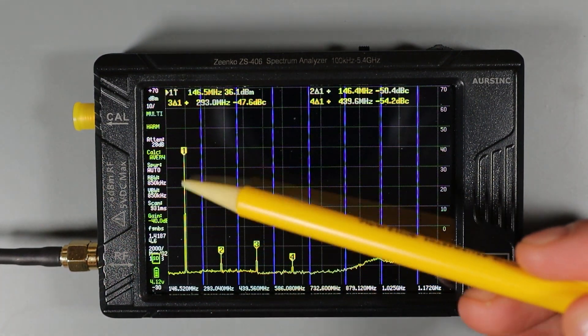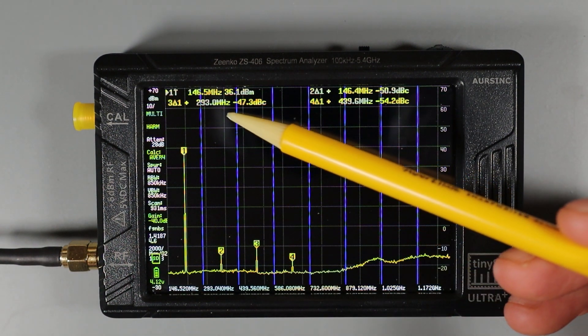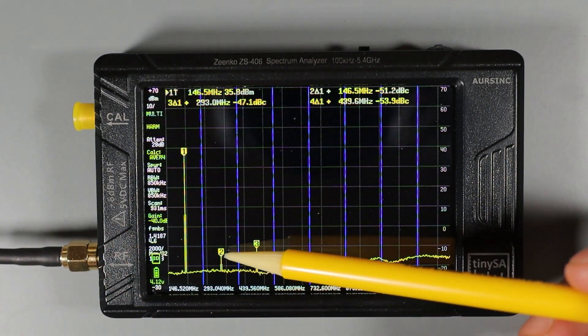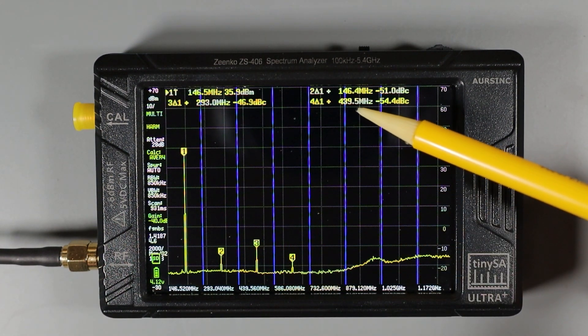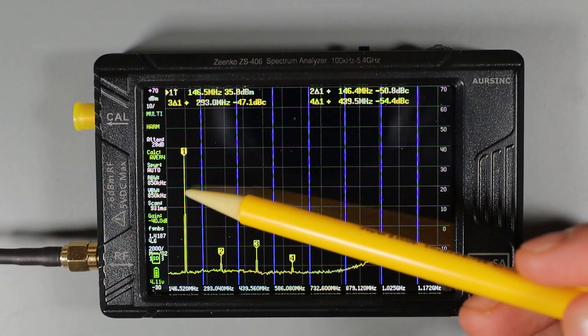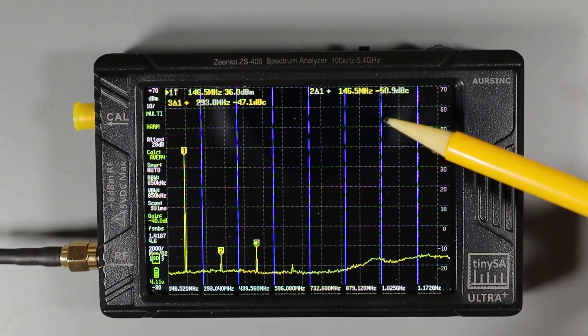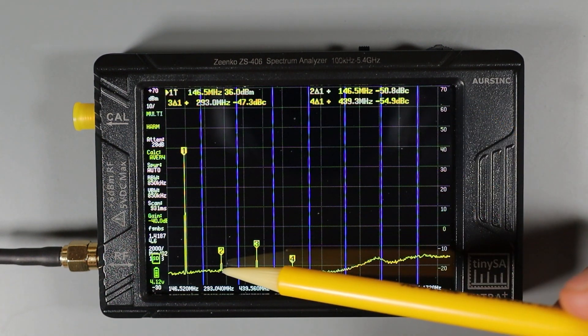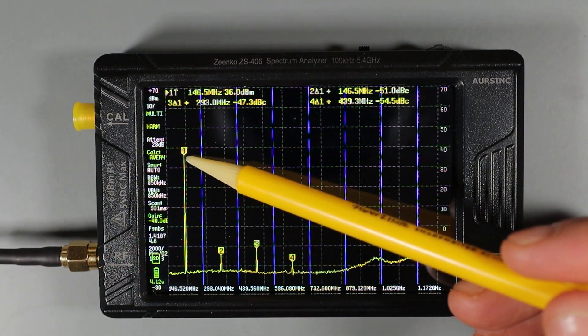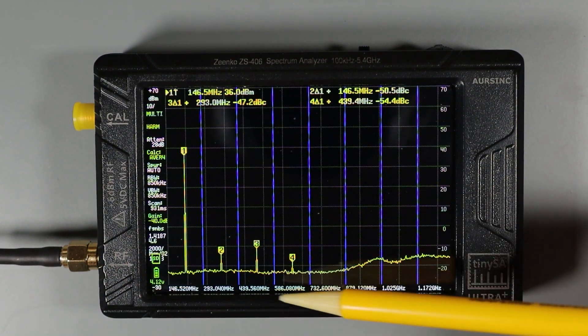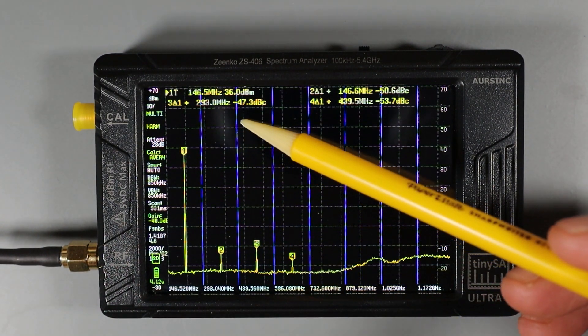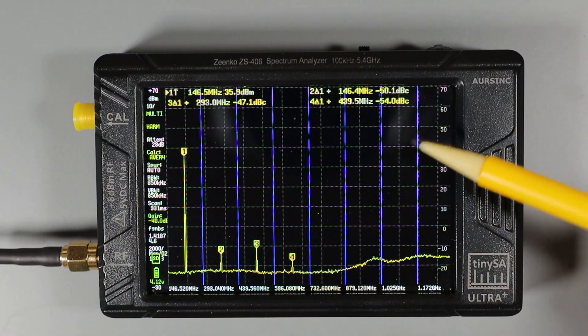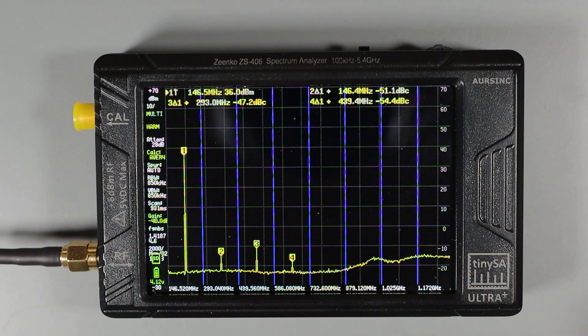Now that the measurement has settled out, you can see we've got four spikes. The first one is our fundamental frequency, and that's measuring a level of 35 or so dBm. Now the second harmonic is coming in 146.52 megahertz above the primary frequency, and our signal level is minus 51 or so dBc. Now the C in the measurement indicates that the signal level is relative to the center or fundamental frequency. Now spike number three is coming in at minus 47 dBc, and number four, which you've kind of seen coming and going, is down at minus 54 dBc or so.